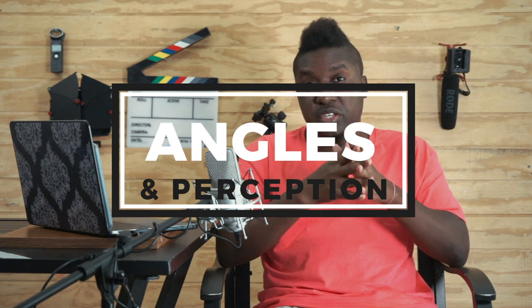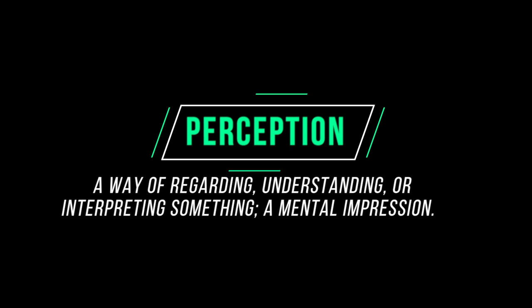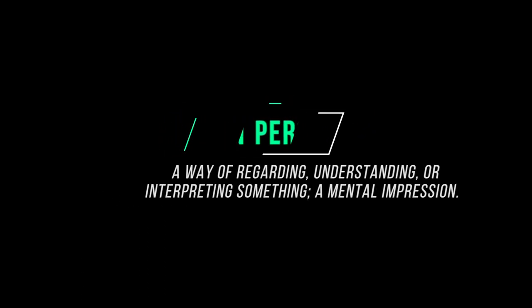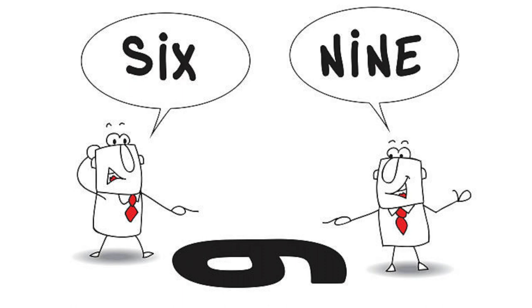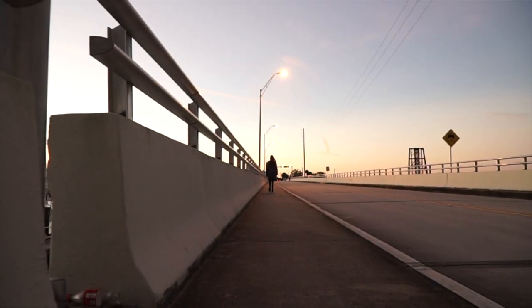We'll look at how you can use angles to control your viewers' perception of the scene or the situation playing out in your film. The reason why controlling your audience's perception is important is so that you can make them interpret a scene how you want them to. Like the number six can also be a number nine, depending on your point of view.